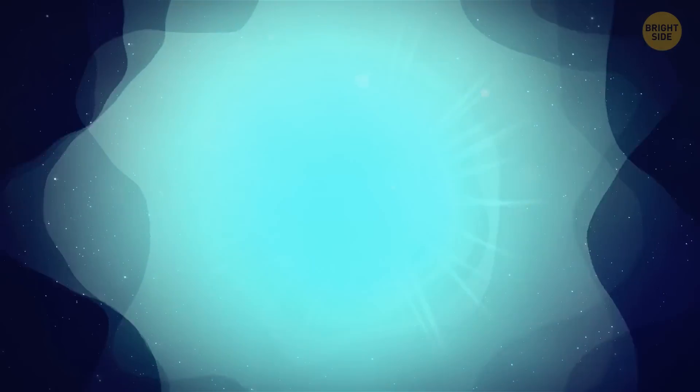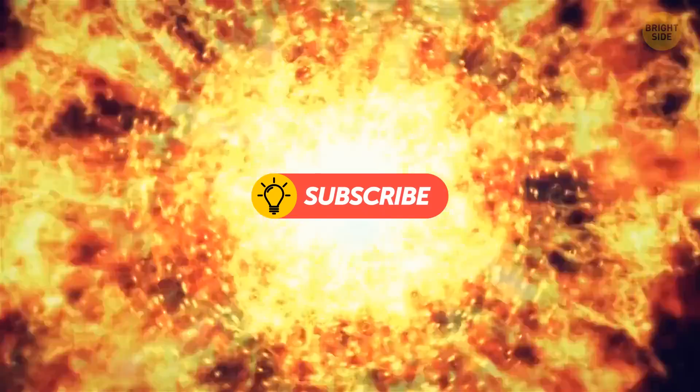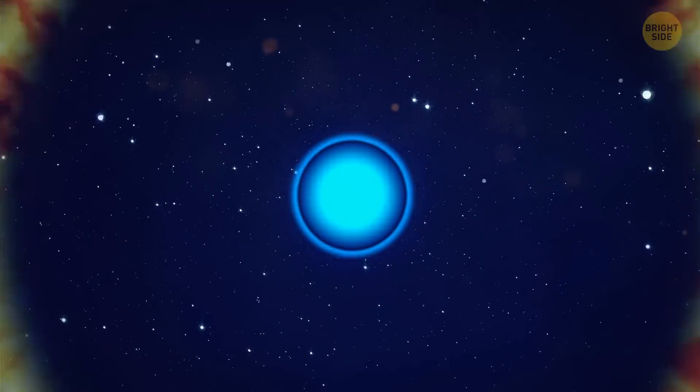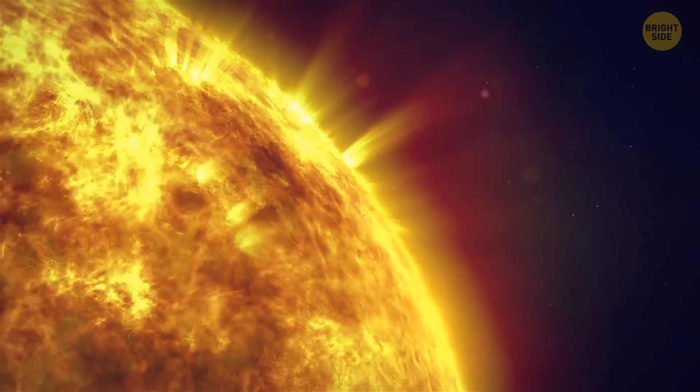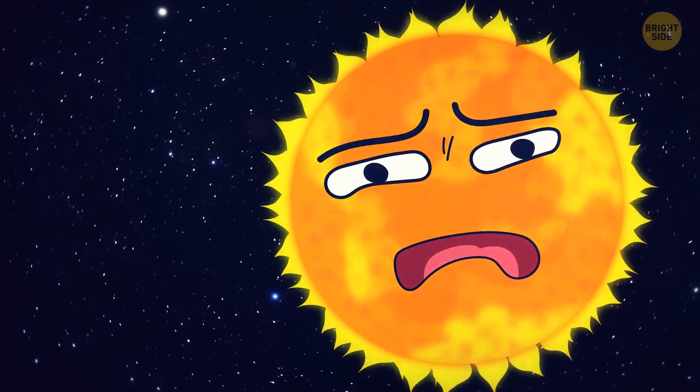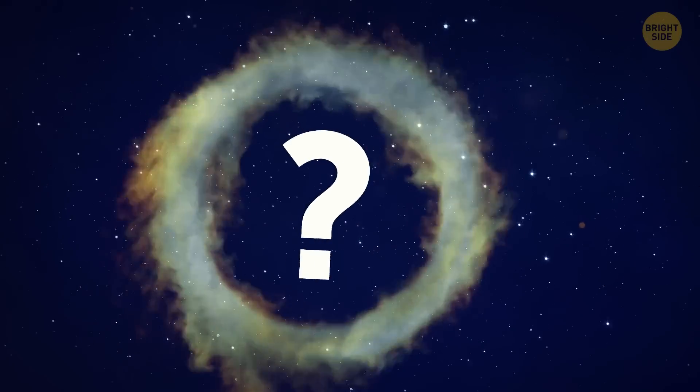But the key difference is that in a regular supernova, the outer layers of the star are blown away by the energy released during the boom. Meanwhile, in a quasi-star, these outer layers are massive enough to absorb the energy without being blown away.